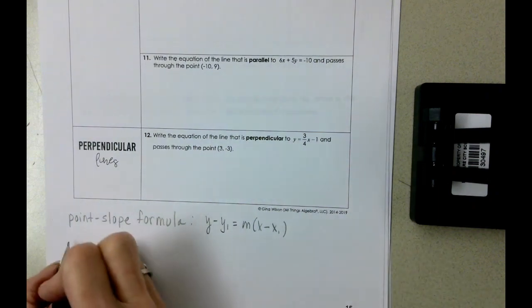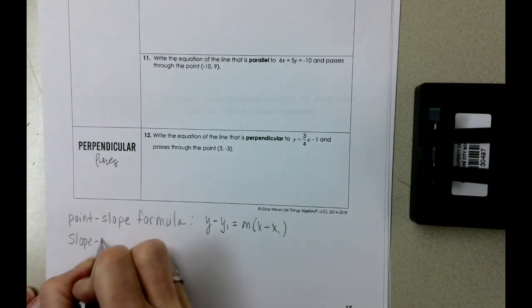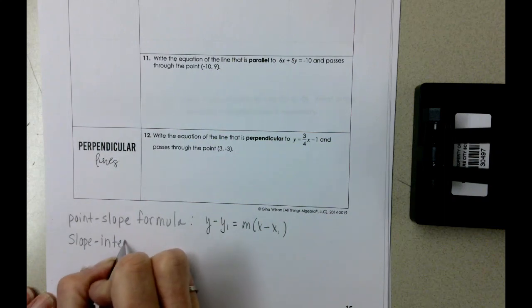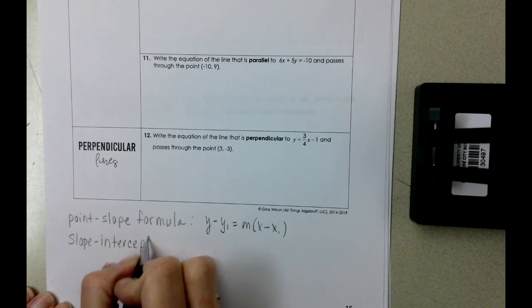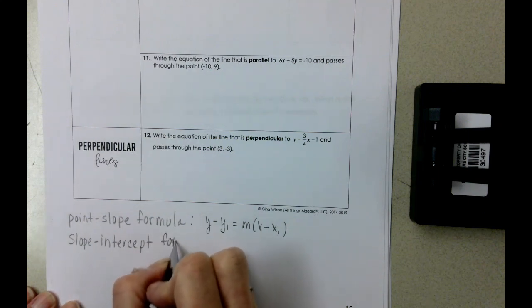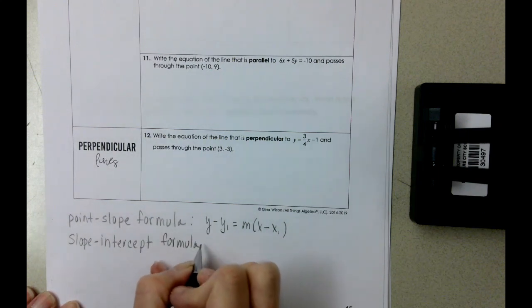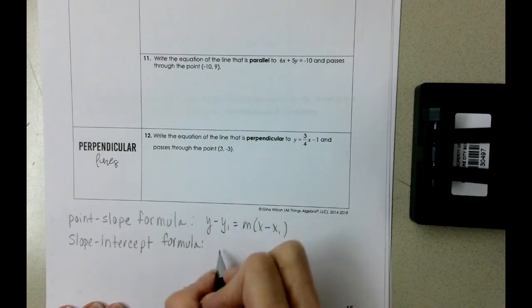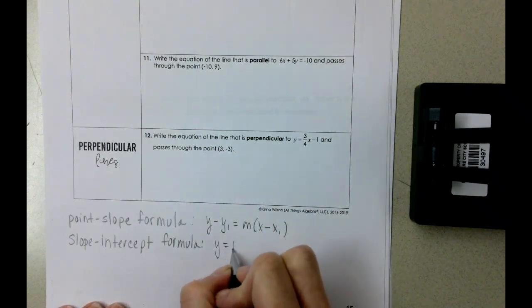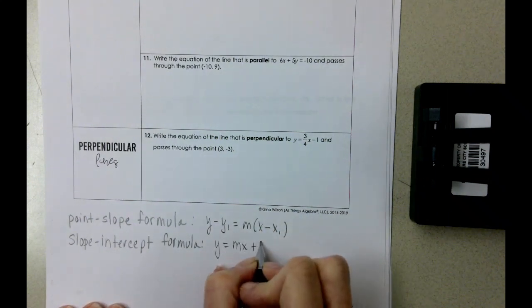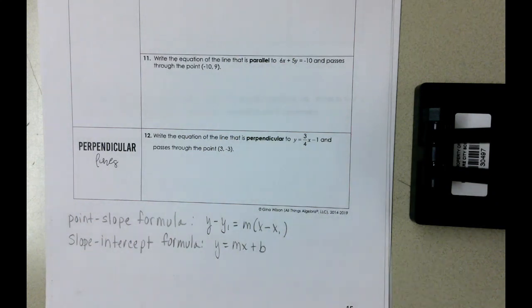And then the slope intercept formula, you're usually pretty familiar with this one, but it is y equals mx plus b. Remember that m represents the slope.